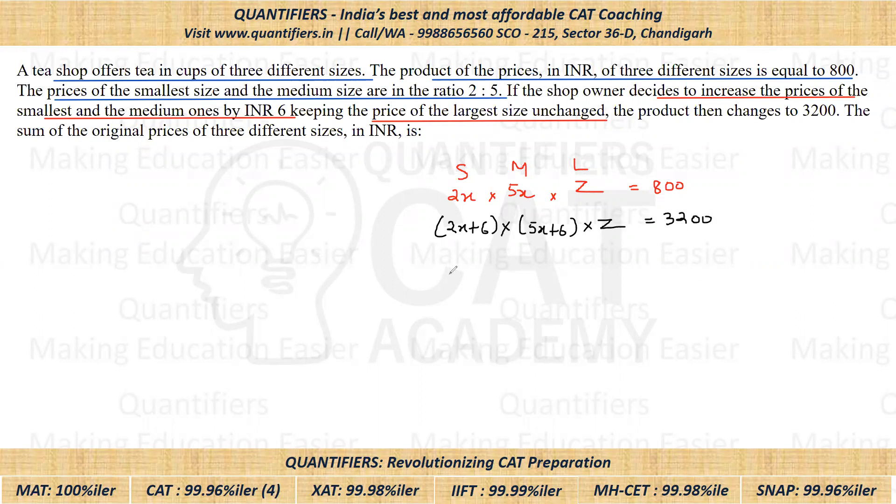Now if you see, if I divide the second equation by the first one, right hand side 3200 divided by 800 will be 4, and z and z cancel out. So we will be having this equation: product of 2x plus 6 and 5x plus 6 in the numerator divided by 2x into 5x in the denominator. And this is equal to 3200 by 800, which is equal to 4.